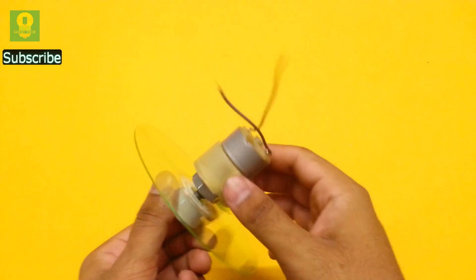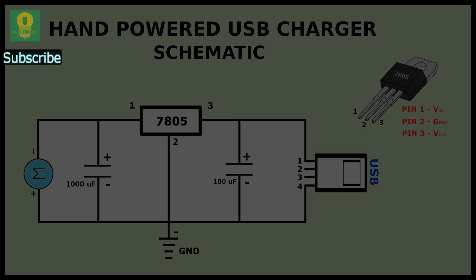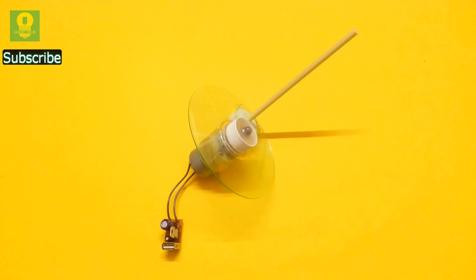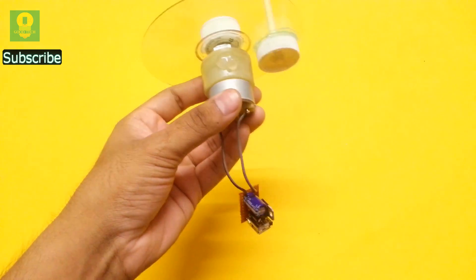Take the motor mechanism we made earlier. Refer to the schematic and connect the motor wires as input to charging circuit. Using hot glue, paste the circuit over the motor.